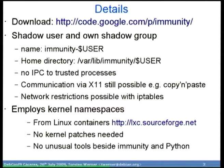Some features I already mentioned: there's a shadow user with its own group, where the normal username gets prefixed by 'immunity-'. It creates an extra user. The advantage is that no inter-process communications to your trusted processes are possible anymore — you cannot kill or send signals to your trusted processes. Communication via the X11 protocol is still possible, of course; I don't use X11 security.